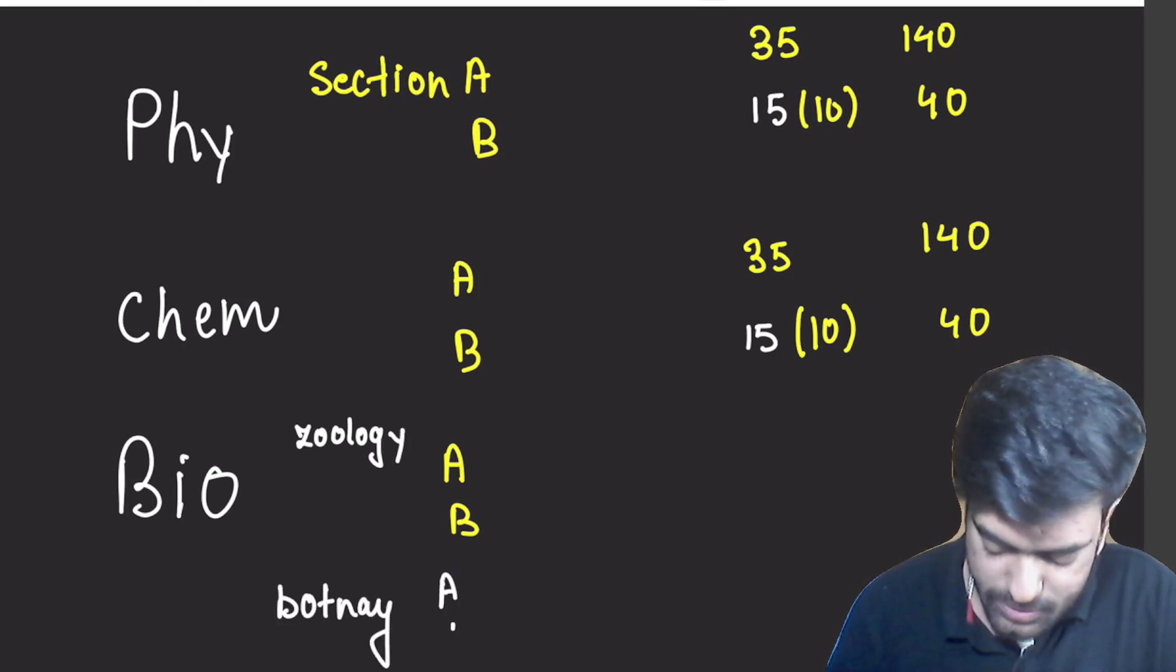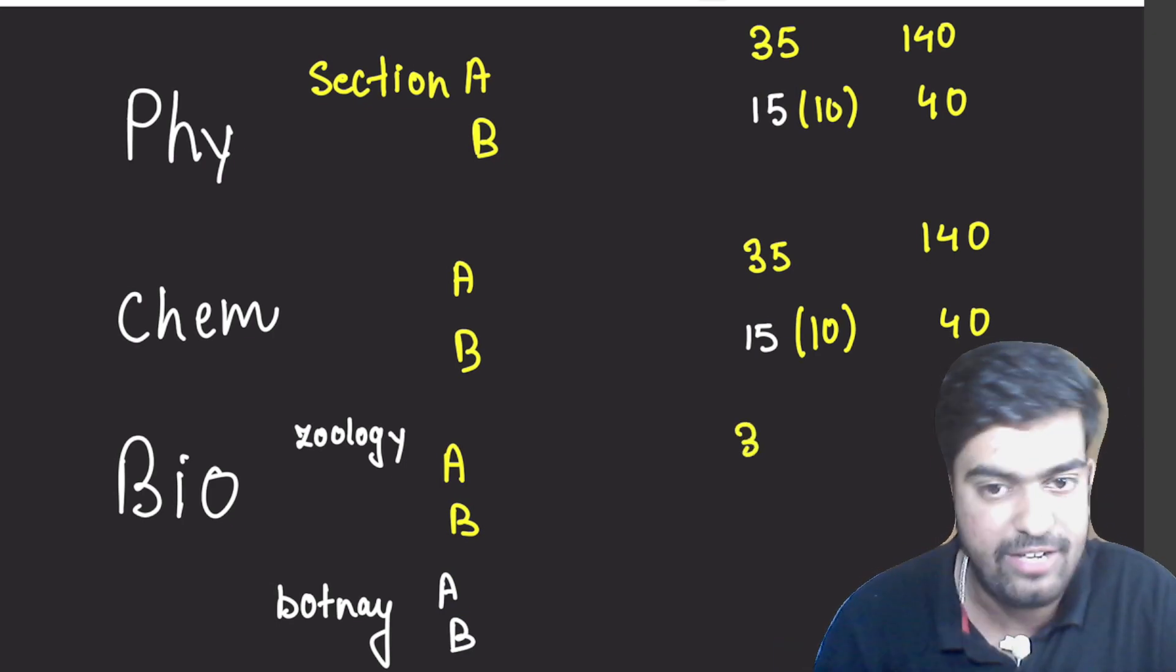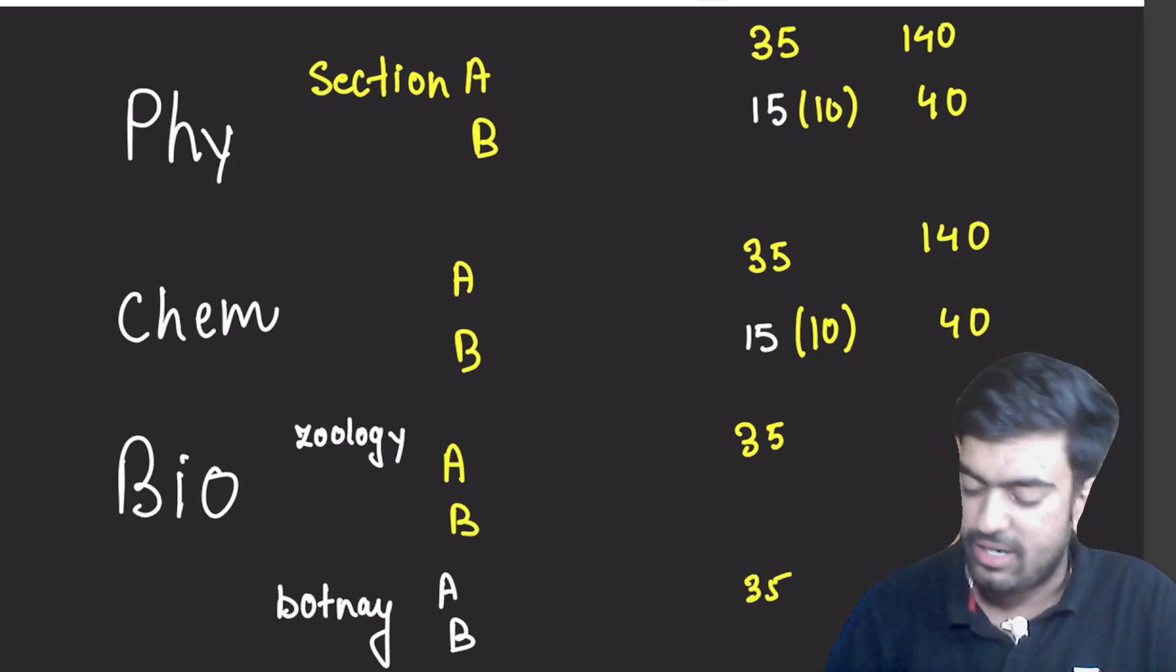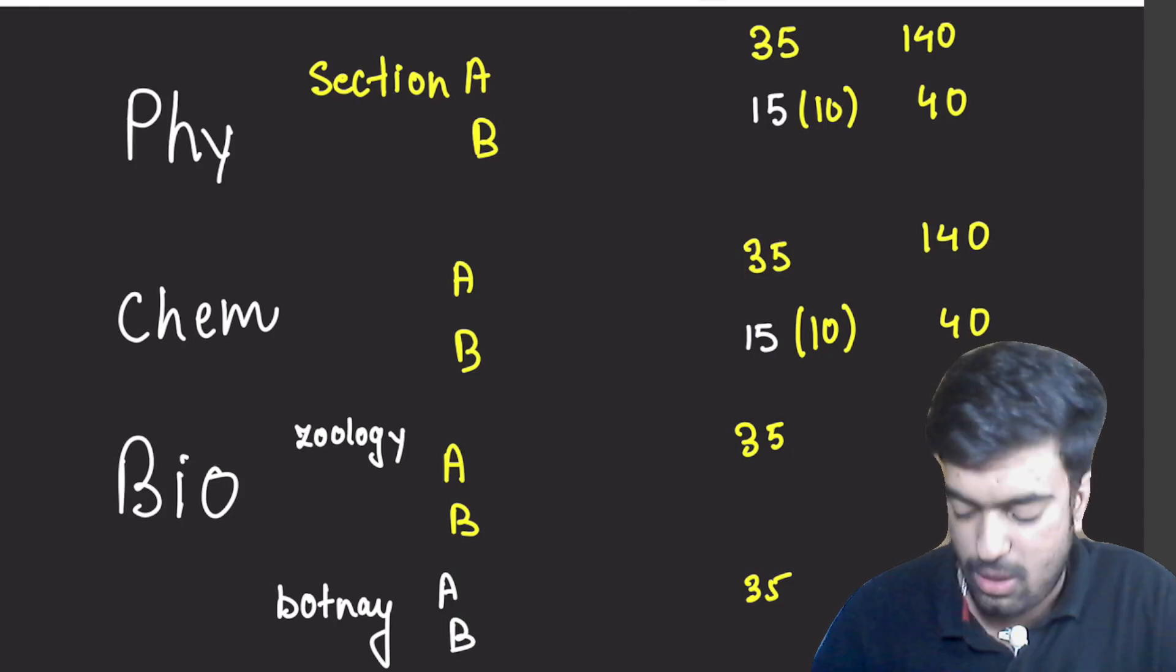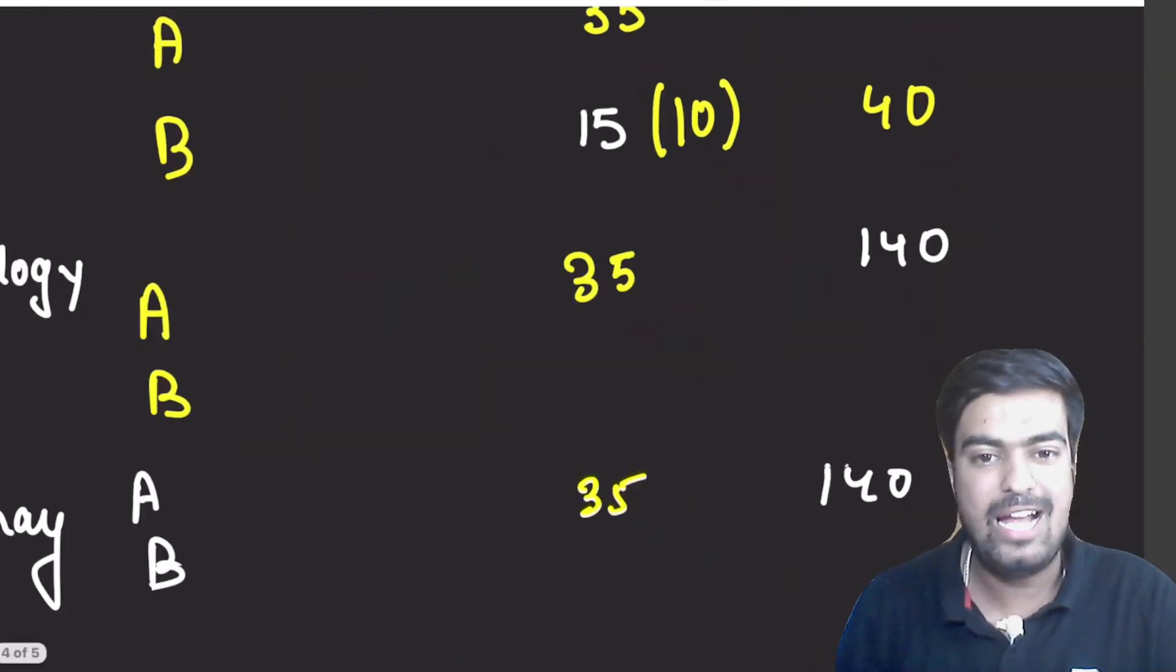Similarly here also, in Zoology how many questions in Section A? 35. And in Botany also, Section A will consist of 35 questions, which both are going to give you 140 and 140 marks.